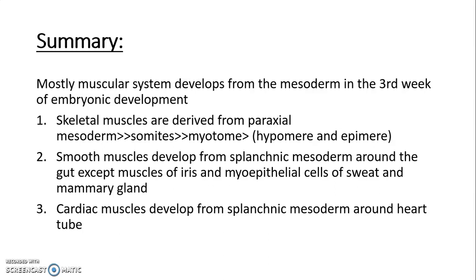In summary, the muscular system develops from mesoderm in the third week of embryonic development. Skeletal muscles are derived from paraxial mesoderm, where somites develop. In somites, two muscle-forming myotome regions — hypomere and epimere — give rise to hypaxial and epaxial muscles. Smooth muscles derive from splanchnic mesoderm around the gut, except the iris muscles and myoepithelial cells. Cardiac muscles also derive from splanchnic mesoderm around the heart tube.